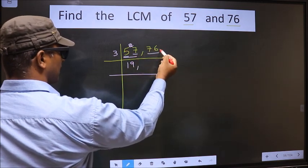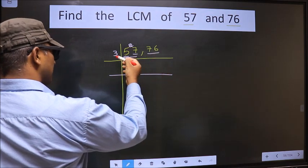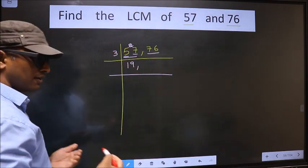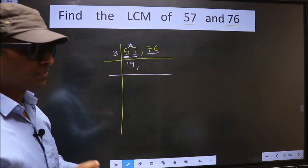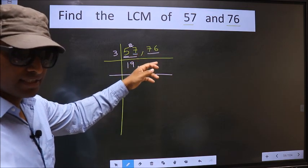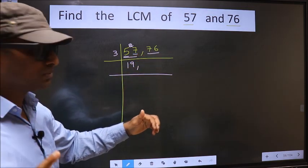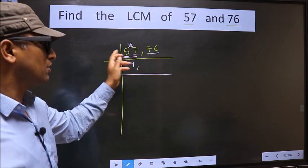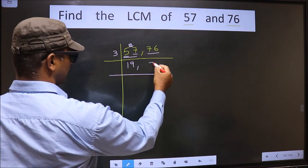Now the other number 76. To check whether this is divisible by 3 or not, we should add the digits. That is 7 plus 6, 13. Is 13 divisible by 3? No. So this number is also not divisible by 3. So we write it down as it is.